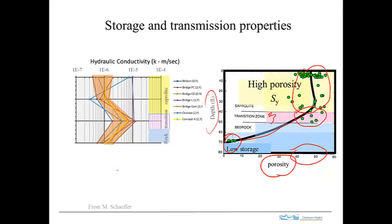For hydraulic conductivity, this plot was generated by Malcolm Shaffer, who studied several sites in this area. He characterized hydraulic conductivity as a function of depth and location within the conceptual model. The transition zone data and saprolite data are shown separately from the rock. There's a good bit of scatter on this log plot, but in general, the transition zone seems to be a bit higher in hydraulic conductivity than the saprolite and rock — by perhaps half an order of magnitude on average.